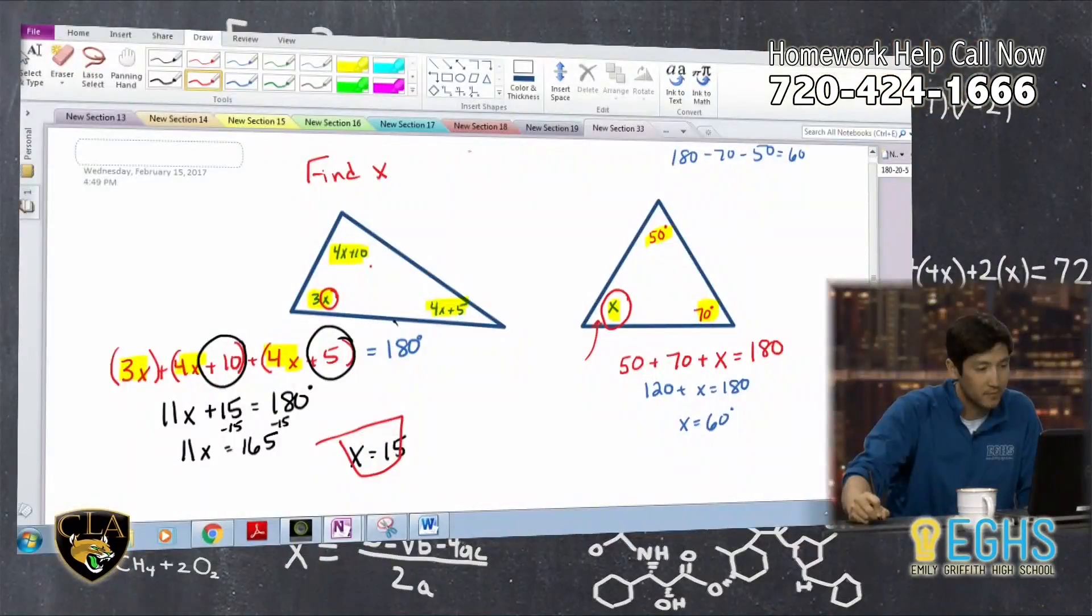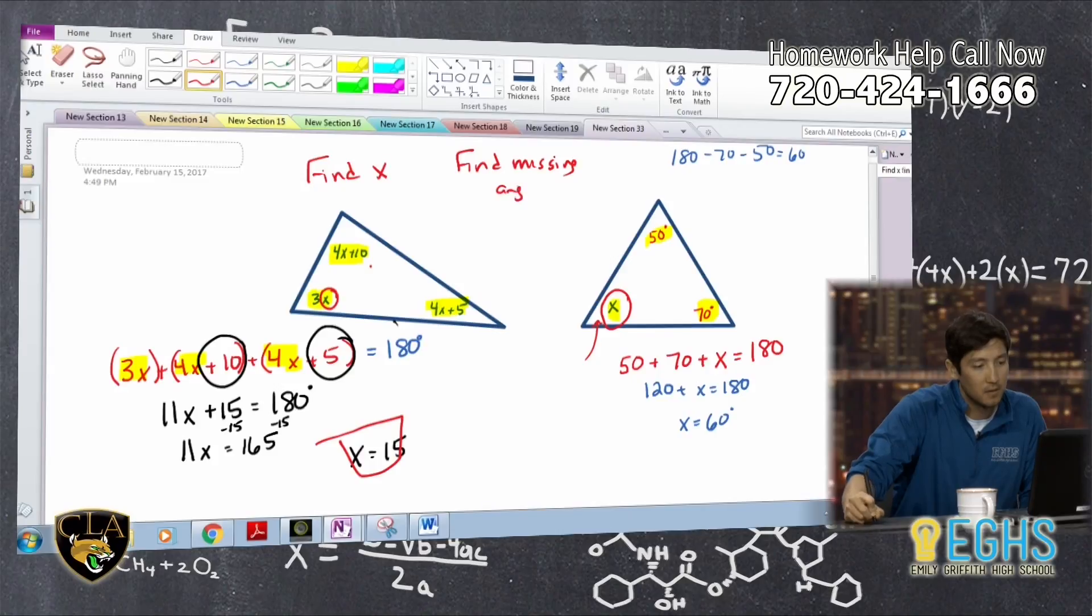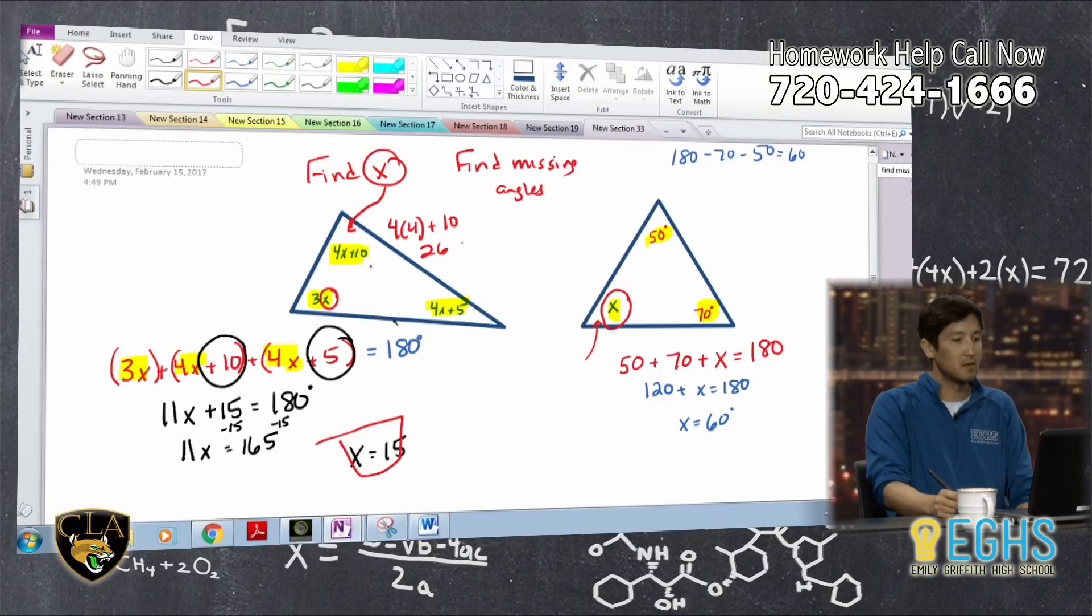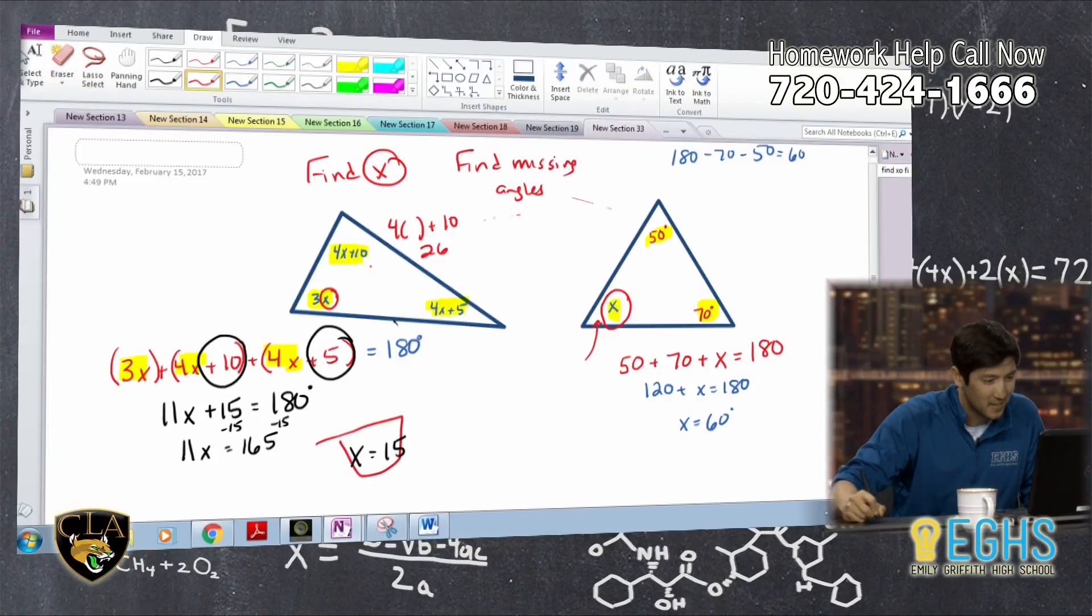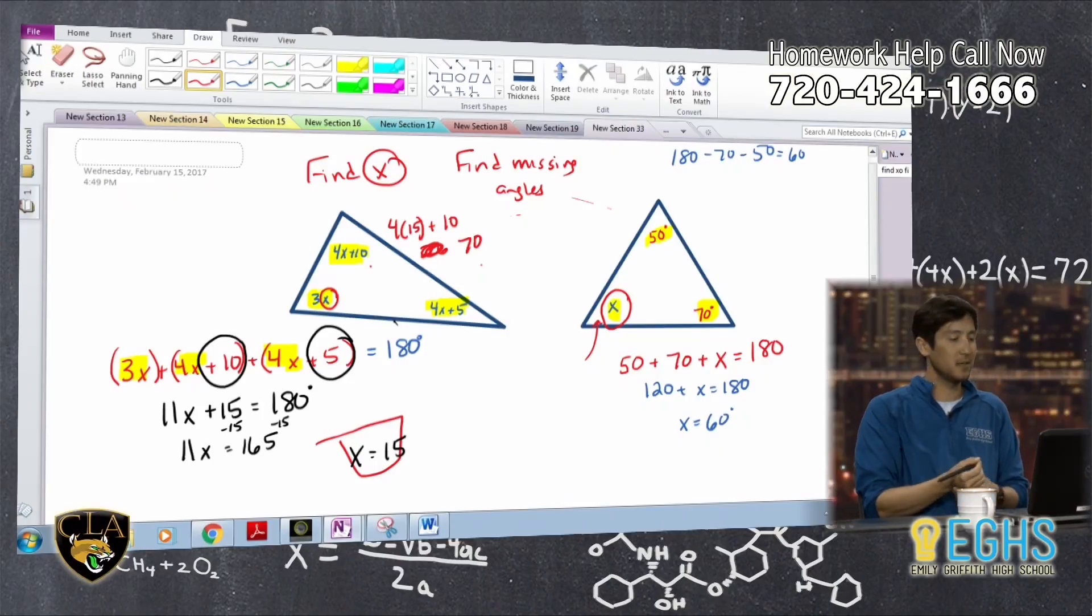So if it says find missing angles, you have to take this value of X and plug it in, right? So in this case, it would be 4 times 15, so that'd be 70. And you could do that with all of them, and a good way to check your answer here is that once you've figured out all your angles, they should add up to 180 degrees unless you made a mistake.